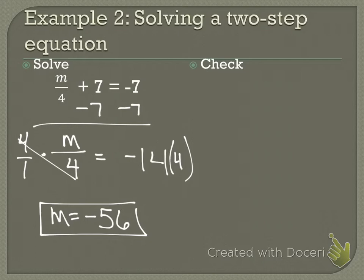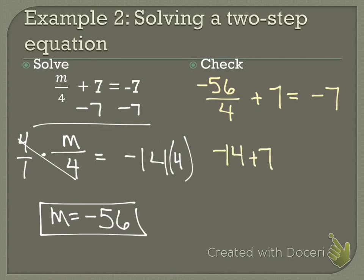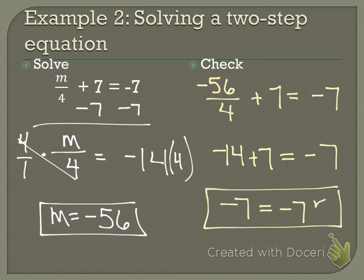Maybe you forgot the negative, so that would be half credit. Now we're not done, we have to go back and check. Negative 56 divided by 4 plus 7 equals negative 7. This would be negative 14 plus 7 equals negative 7, and that's true. Negative 7 equals negative 7. Again, a three-step checking is what I'm looking for on your homework. And that's it for Example 2.